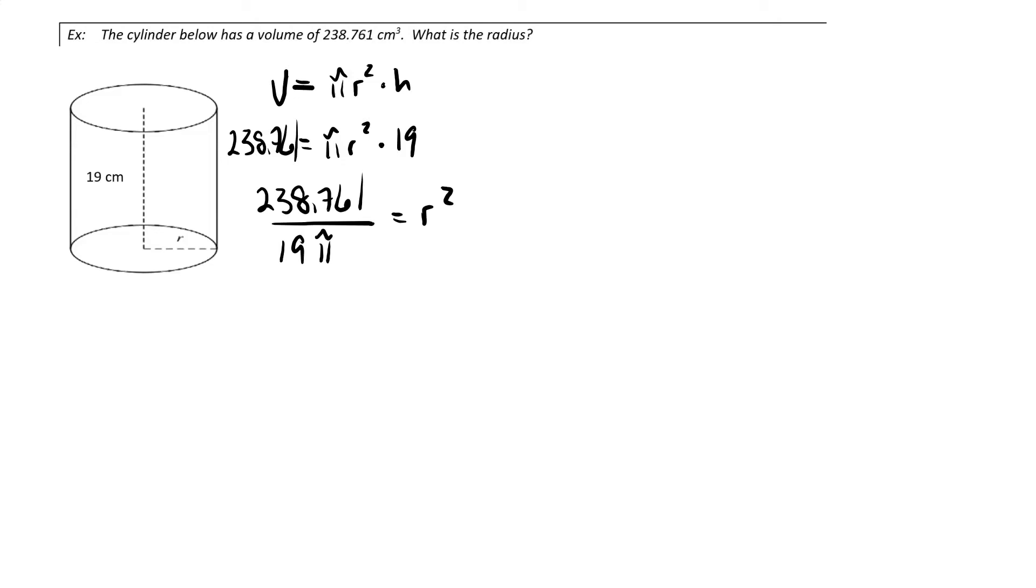I'll do that math on my calculator, and I get 4 equals r squared. Therefore, I can find r by taking the square root of 4, which most people can figure out is 2 without even using the calculator. So the radius is 2 centimeters.